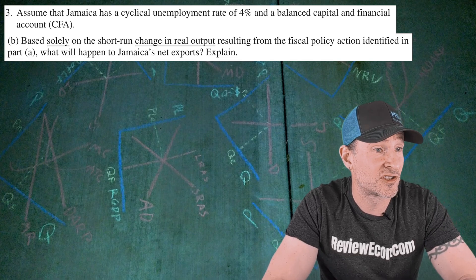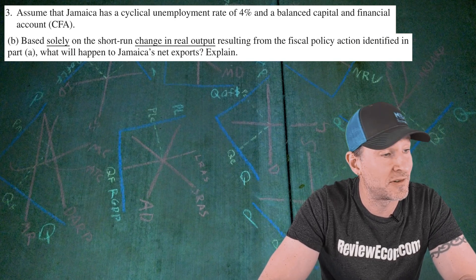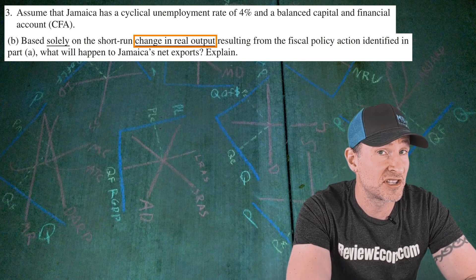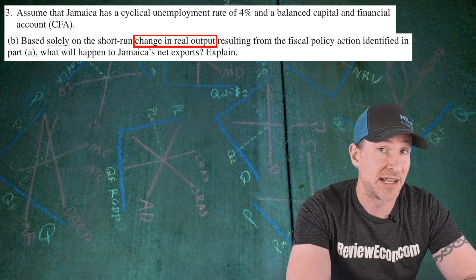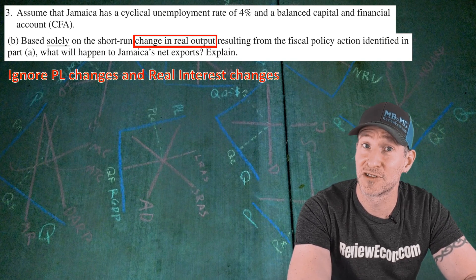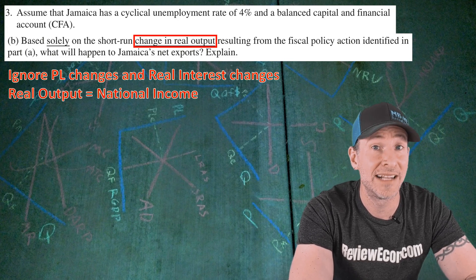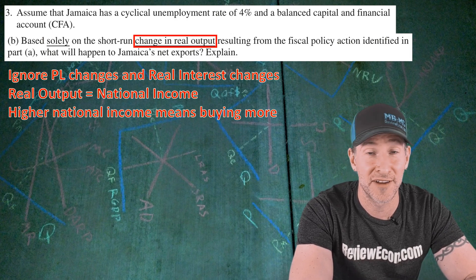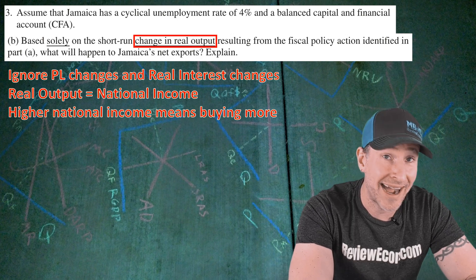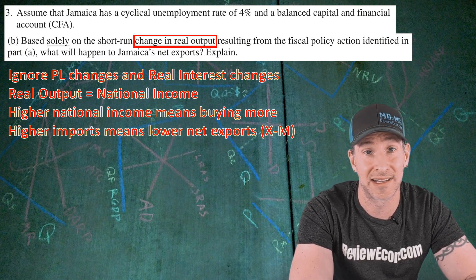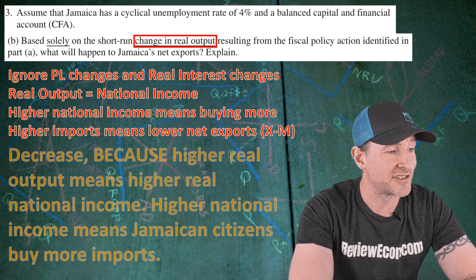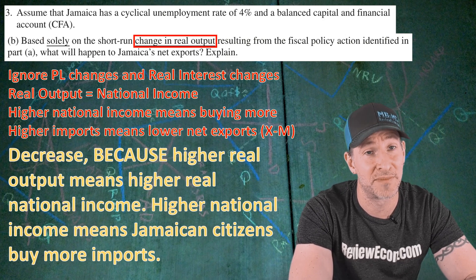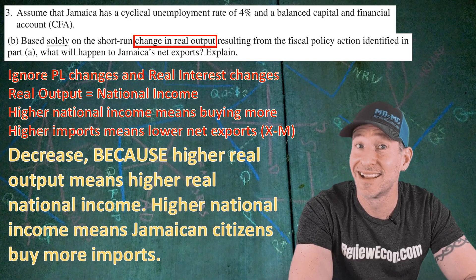For part B, we are asked: based solely on the change in real output that results from the fiscal policy action identified in part A, what will happen to Jamaica's net exports? We are focusing on just the change in real output, which means we ignore any price level changes or real interest rate changes. Real output means real national income, and when a country has more national income, citizens buy more stuff — both domestically and imports. Higher imports mean lower net exports, since net exports equals exports minus imports. So the answer is decrease, because higher real output means higher national income, and higher national income means Jamaican citizens buy more imports.